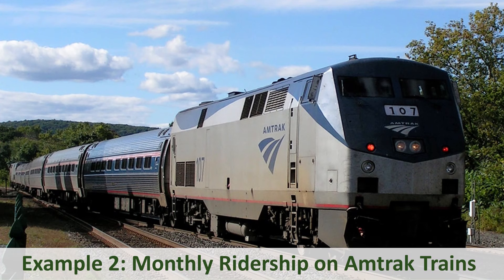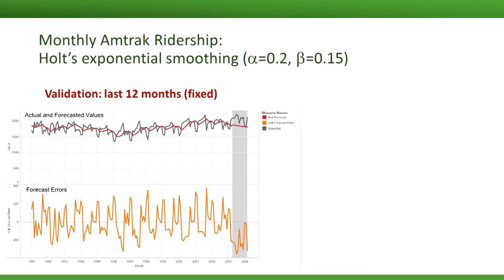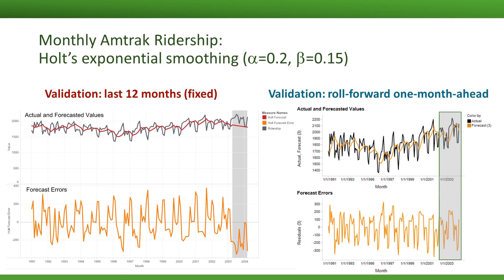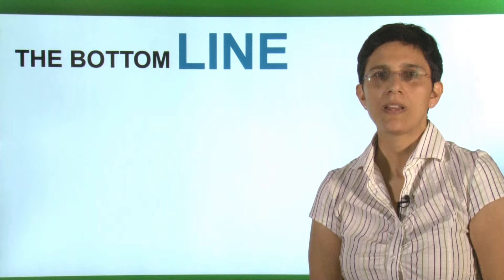Let's see one more example comparing a fixed validation period to a roll-forward validation. In the first case, we'd forecast monthly Amtrak ridership for the next 12 months using Holt's exponential smoothing with alpha = 0.2 and beta = 0.15 (the software defaults). The forecasts are linearly decreasing over the validation period. In the roll-forward scenario, we update the forecast each month, and during the validation period we see a completely different picture because we are updating our model month by month.